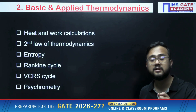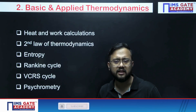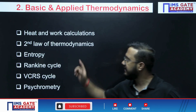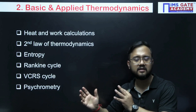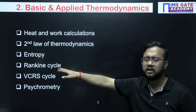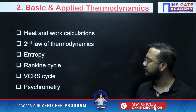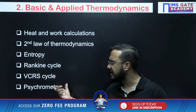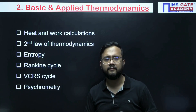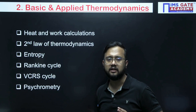Subject number two is Basic Thermodynamics and Applied Thermodynamics. Heat and work calculations are there — the most common topic, with questions coming every year. Then, the Second Law of Thermodynamics: Kelvin-Planck's statement, Clausius's statement. Then Entropy — you will always find a numerical from this topic. Rankine cycle, VCRS, and Psychrometry. These are the topics from which you can expect numericals. These are hot topics — every year, questions are coming from them.